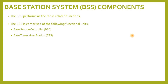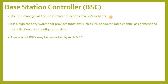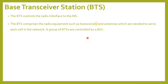The Base Station System (BSS) performs all the radio-related functions, and is comprised of two functional units: the Base Station Controller (BSC) and the Base Transceiver Station (BTS). The BSC manages all the radio-related functions of a GSM network. It is a high-capacity switch that provides functions such as MS handover, radio channel assignment, and the collection of cell configuration data. A number of BSCs may be controlled by each MSC. The BTS controls the radio interface to the mobile station and comprises the radio equipment, such as transceivers and antennas, which are needed to serve each cell in the network. A group of BTSs are controlled by a BSC.